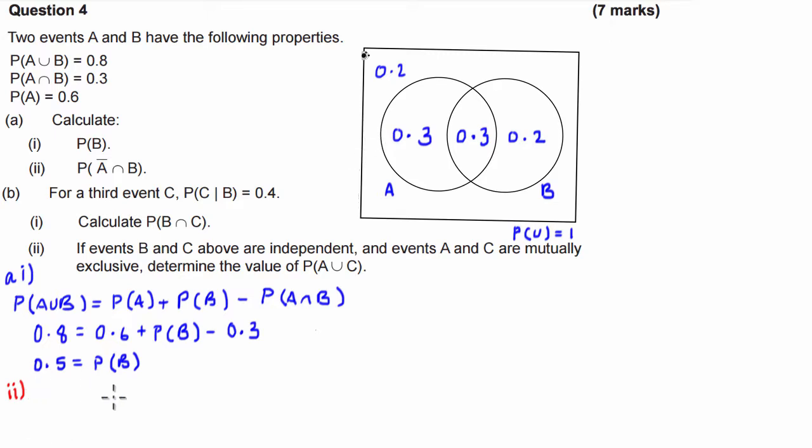We can refer to our Venn diagram or we can use a formula. Now the probability of it being not A and B is going to be equal to the probability of just being in B and not being in A. So it's just equal to that piece, 0.2. And hopefully you guys are aware of that because it has to be in both at the same time.